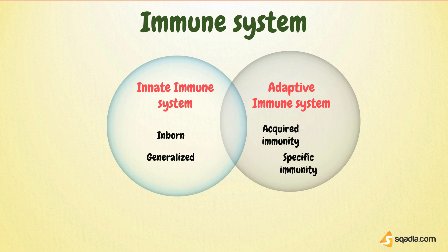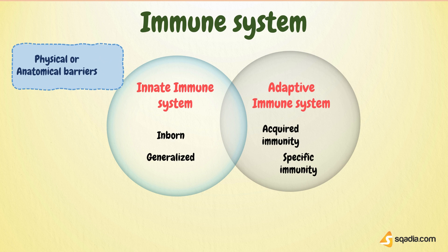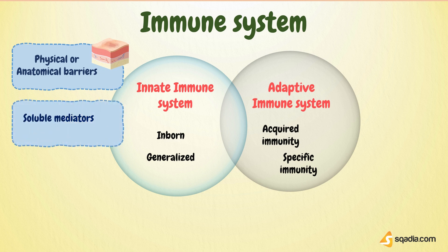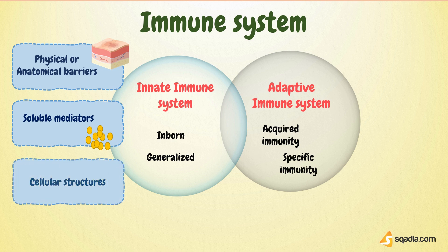Innate immunity is provided by three main components: physical or anatomical barriers, for example skin and mucous membranes; some soluble mediators, such as cytokines and chemokines; and lastly, the third component — the cellular structures involved in immunity.